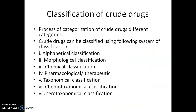Now, what do you mean by the term classification? Classification is a process of categorization of the crude drug into different categories. Just like we can classify students in different categories according to their marks, ability, skills, or alphabetical order of their names, similarly we can classify crude drugs under seven different classification systems.